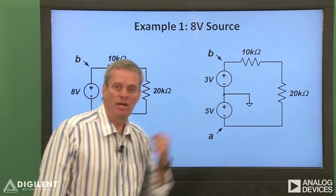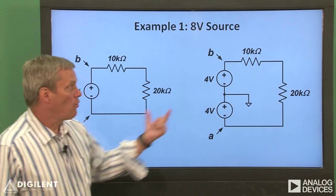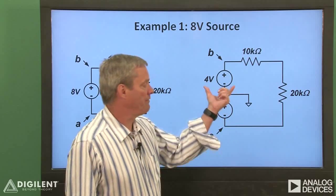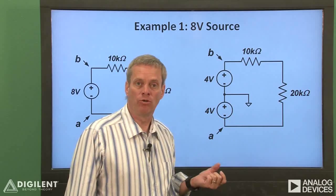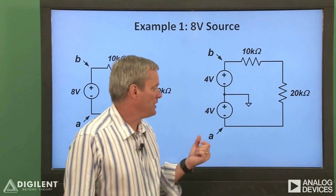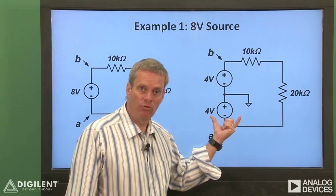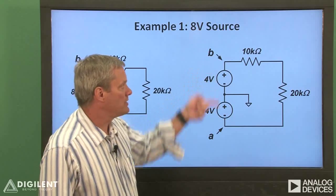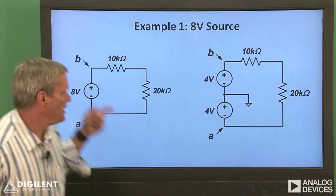This configuration isn't unique. We could use two 4 volt sources. Both of these will be implemented with the waveform generator. This one will apply positive 4 volts relative to ground. This one applies negative 4 volts relative to ground. We still get 8 volts between B and A.